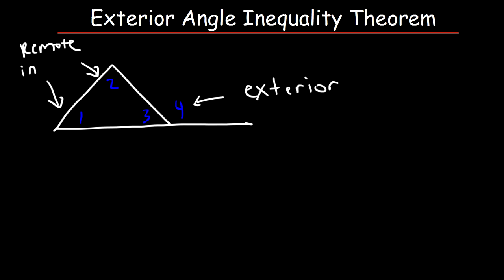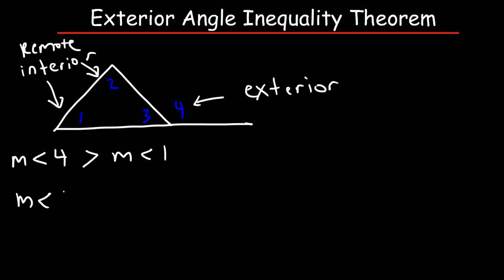The exterior angle inequality theorem states that angle 4 is greater than angle 1 or angle 2. So we can say that the measure of angle 4 is greater than the measure of angle 1, or we can say that the measure of angle 4 is greater than the measure of angle 2.